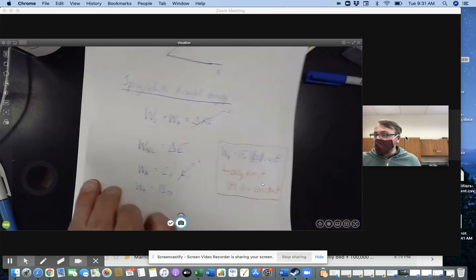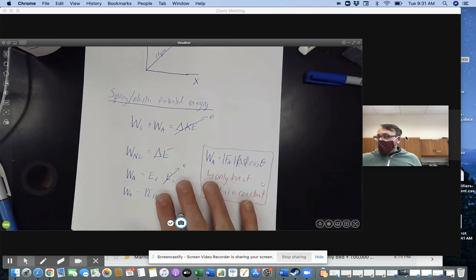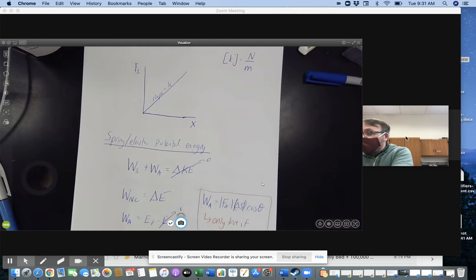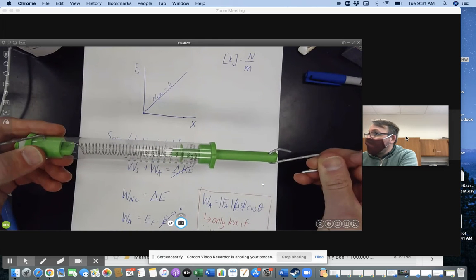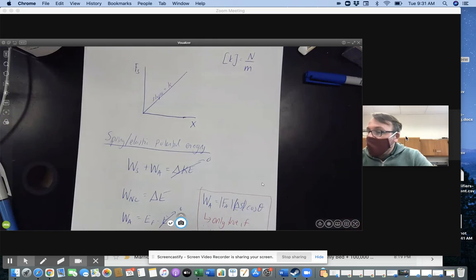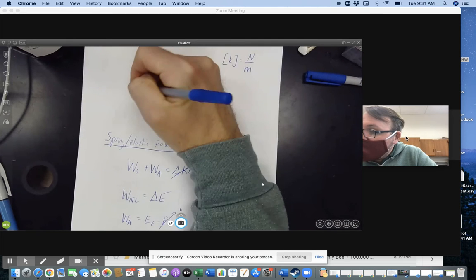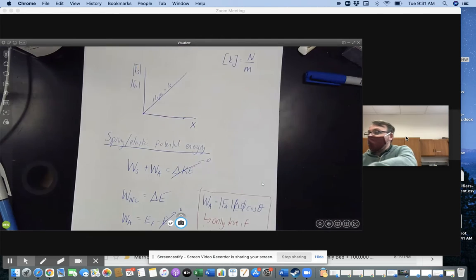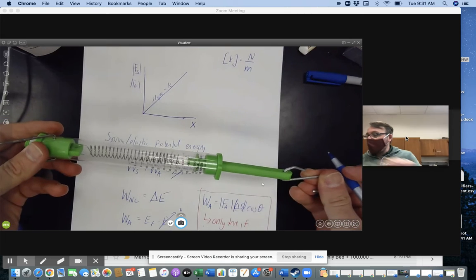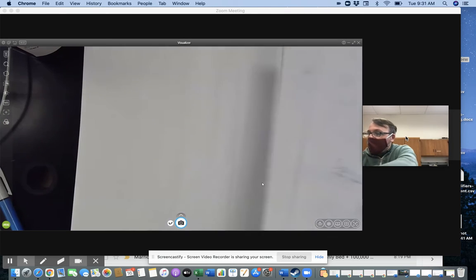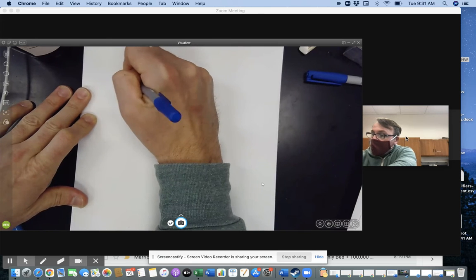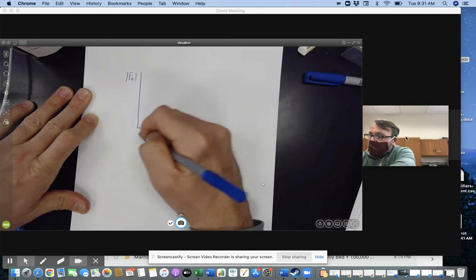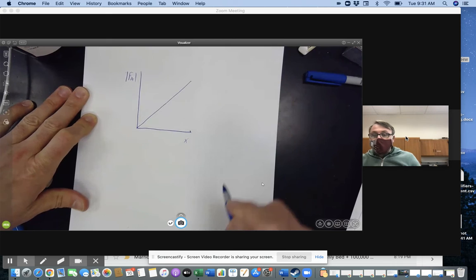So going back to this, what we can say here is that that graph is not only the graph of the spring force as I stretch it, or the magnitude of the spring force, this is the same thing as the applied force that is used to stretch that spring. Actually, let me go to a clean sheet and redraw that. So here, as I stretch it more, the applied force I need to stretch it more is increasing as well.